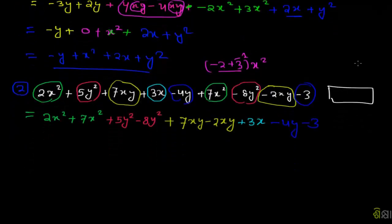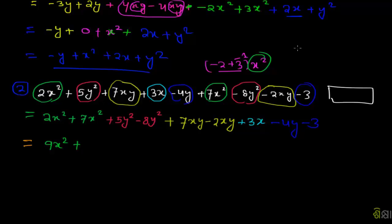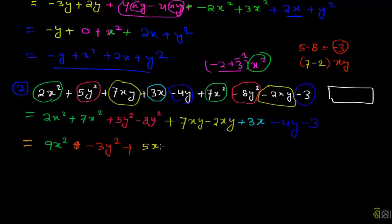You can see this one. You can see that 2s² and x² — x² is common. Common terms: 2 plus 7 is 9, so 9s². For 5y² minus 8y²: 5 minus 8 gives minus 3y squared. For xy terms: 7 minus 2 equals 5, so 5xy.